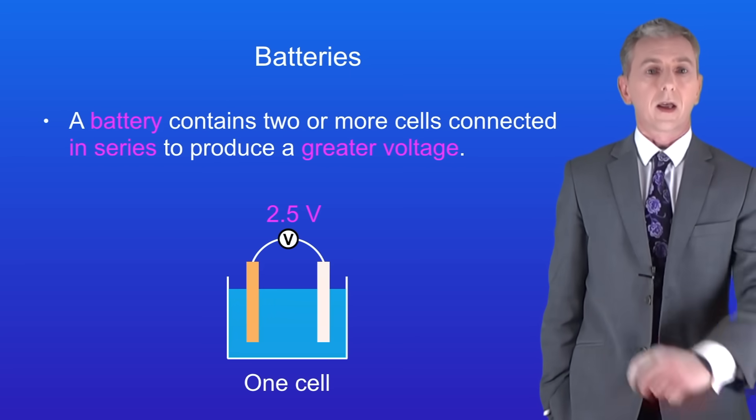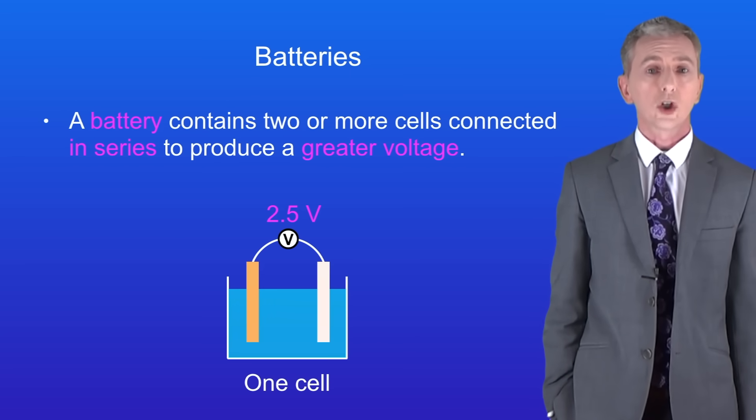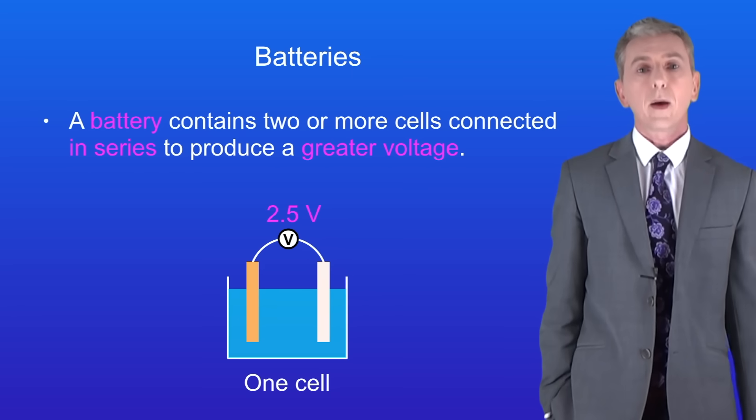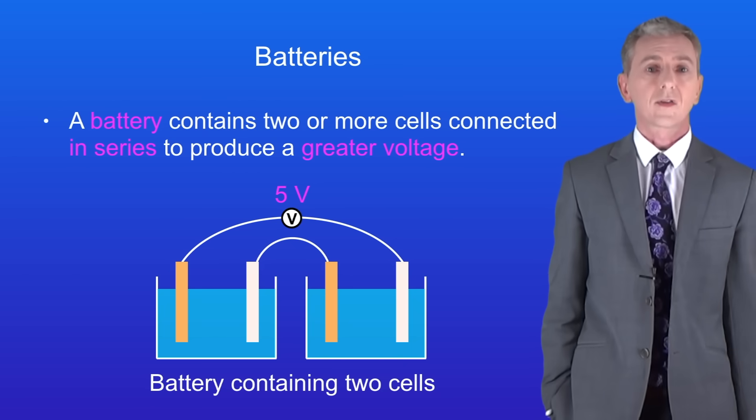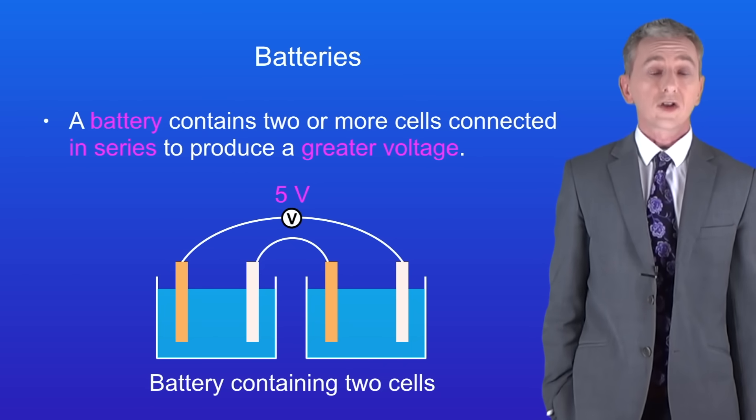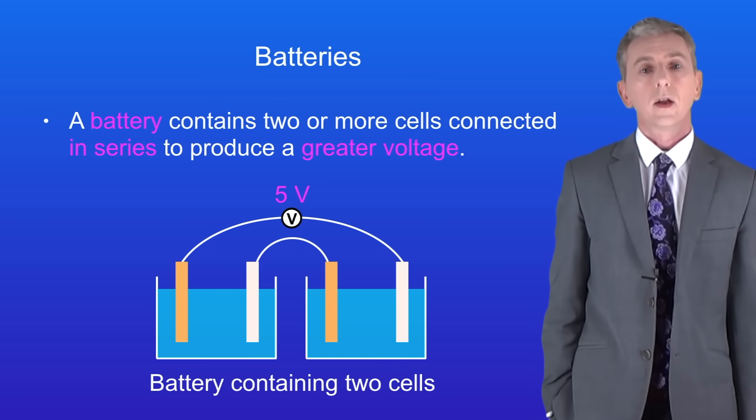Here I'm showing you a single cell with a potential difference of around 2.5 volts. However here I've connected two of these cells in series and this produces a potential difference of five volts. You'll find out more about series circuits in my physics videos.